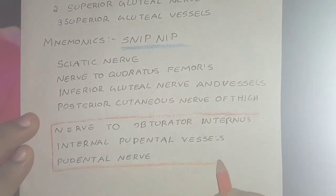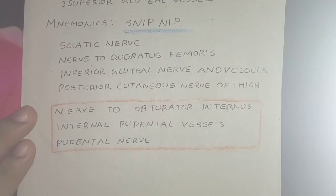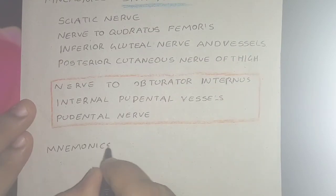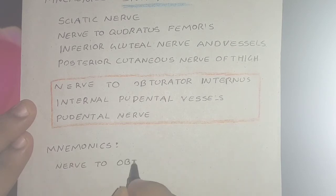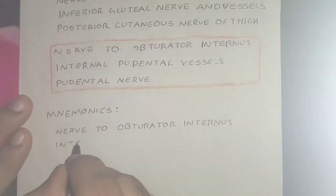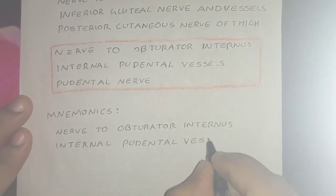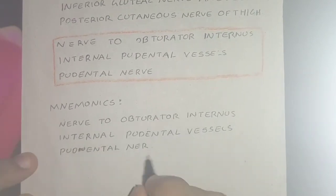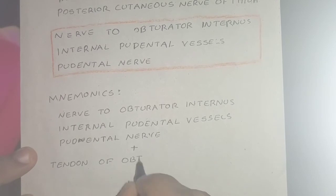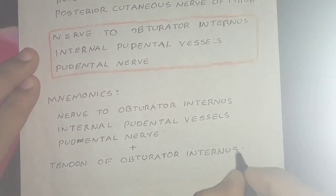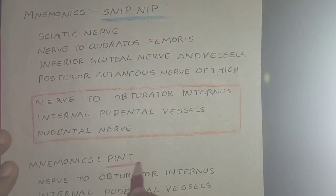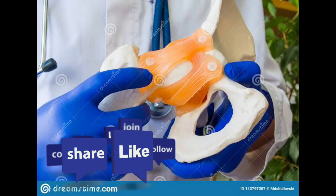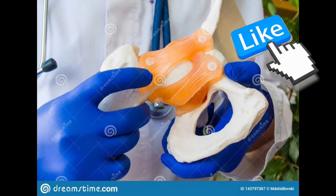Remember these three structures — nerve to obturator internus, internal pudendal vessels, and pudendal nerve — because after a short course in the gluteal region they enter the lesser sciatic foramen. One more structure included is the tendon of obturator internus. All these structures can be remembered by the mnemonic PINT. And that's all for the structures passing through the greater and lesser sciatic foramen.